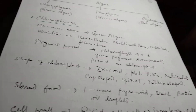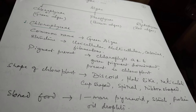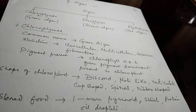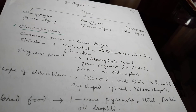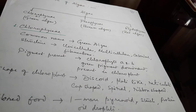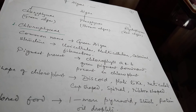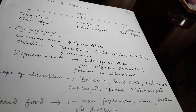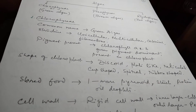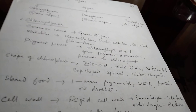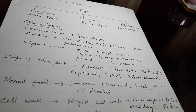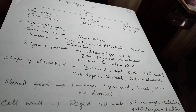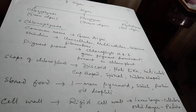Shape of chloroplast में बहुत ज़्यादा variation है — discoid (छोटा-छोटा गोल), plate-like, reticulate (जाली नुमा), cup-shaped, spiral, ribbon-shaped, etc. Stored food: एक से ज़्यादा pyrenoids मिलते हैं जो कि starch का body है, protein और oil droplets भी मिलते हैं as stored food. Cell wall: rigid cell wall — inner layer cellulose, outer layer pectose — bilayer cell wall।